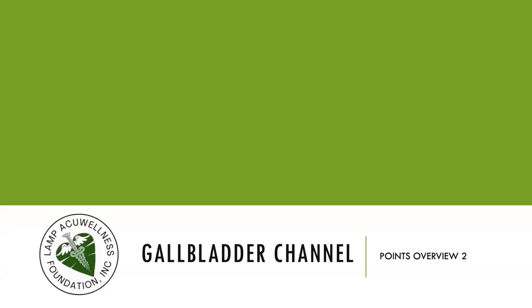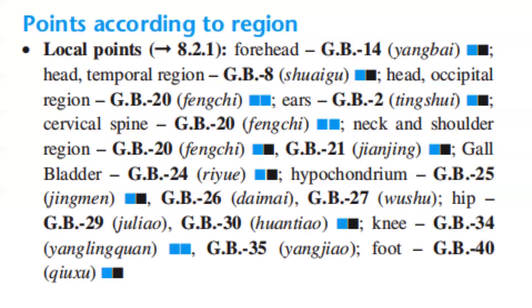Let's discuss the second part of the Gallbladder channel points according to region. Local points: forehead — GB14; head temporal region — GB8; head occipital region — GB20; ears — GB2; cervical spine — GB20; neck and shoulder region — GB20 and GB21; gallbladder — GB24; hypochondrium — GB25, GB26, GB27; hip — GB29, GB30; knee — GB34 and GB35; foot — GB40.